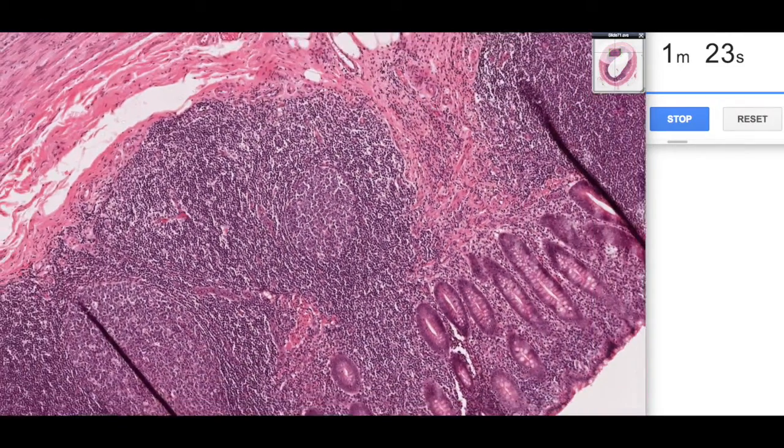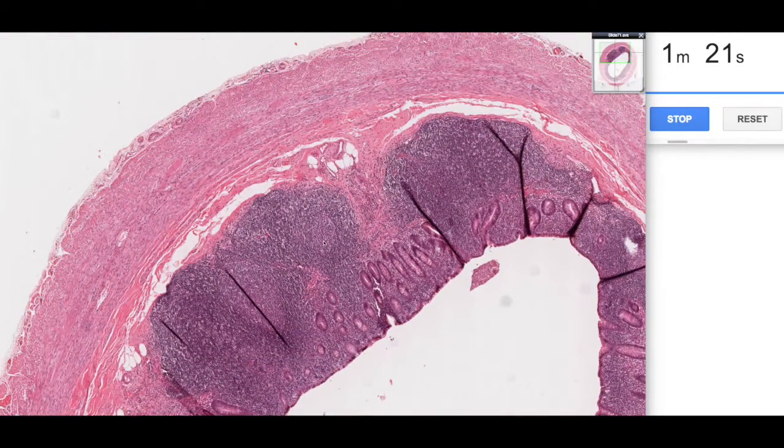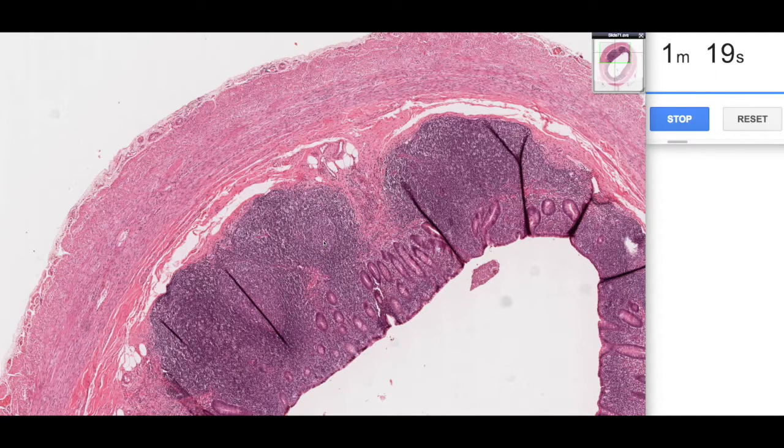So when a part of the mucosa-associated lymphoid tissue has been stimulated to produce antibodies, then you end up with this pale region here. This is what we call a secondary follicle or a germinal center.